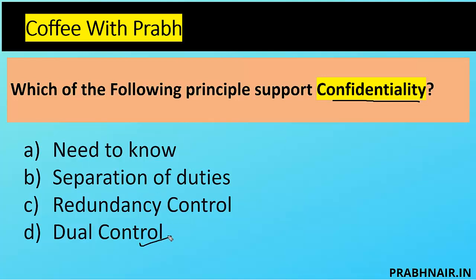Dual control is used to achieve integrity. The best example is a bank locker — the bank issues one key to the consumer and one key to the bank manager. To operate the locker, the consumer must go with the bank manager. This gives assurance that in either person's absence, no one can operate the locker alone, preventing fraud. That is why dual control is used to achieve integrity.